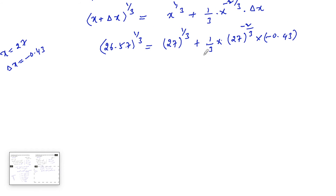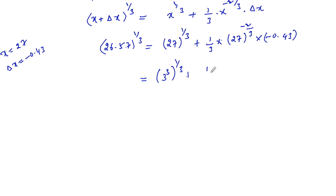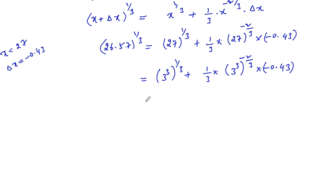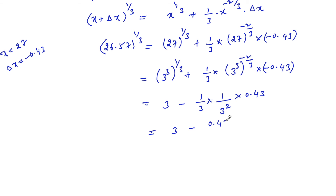Now let us substitute. 27^(1/3) = 3, since 3^3 = 27. And 27^(−2/3) = (3^3)^(−2/3) = 3^(−2) = 1/9. So the expression becomes: 3 + (1/3) · (1/9) · (−0.43) = 3 − 0.43 / (3² × 3) = 3 − 0.43/27.